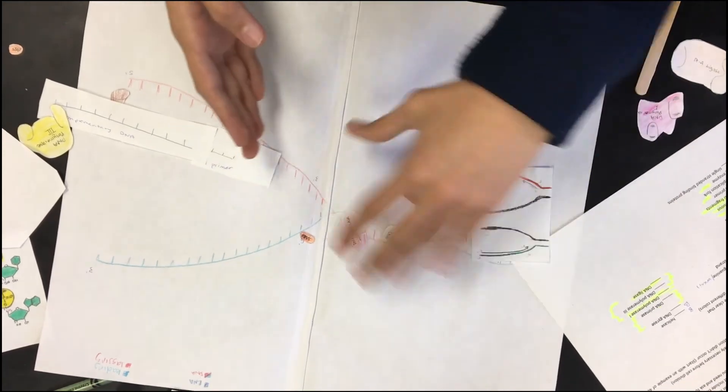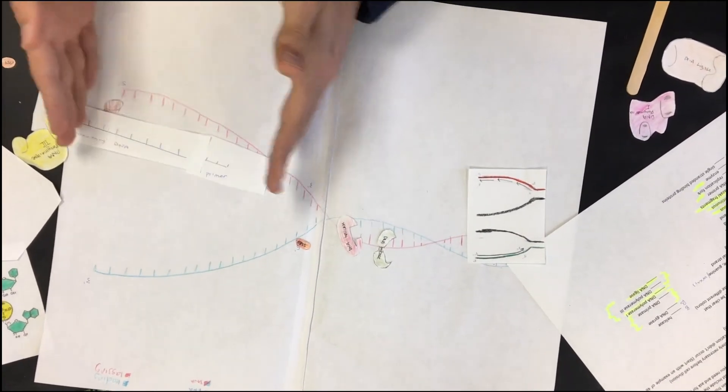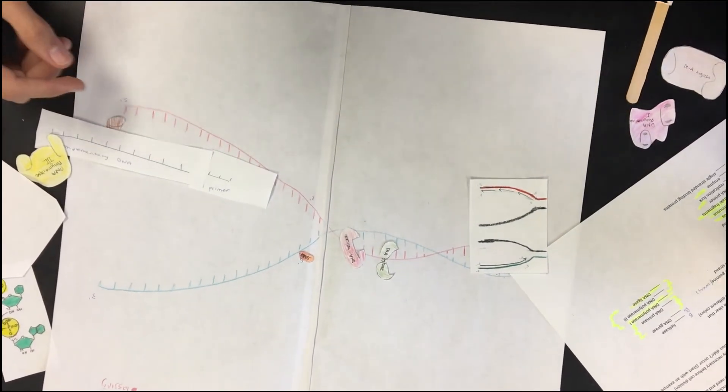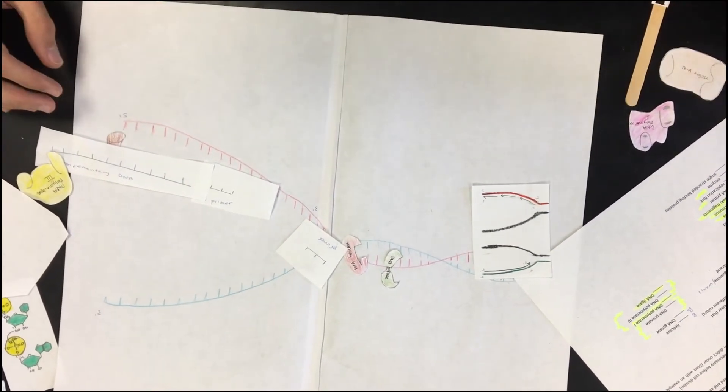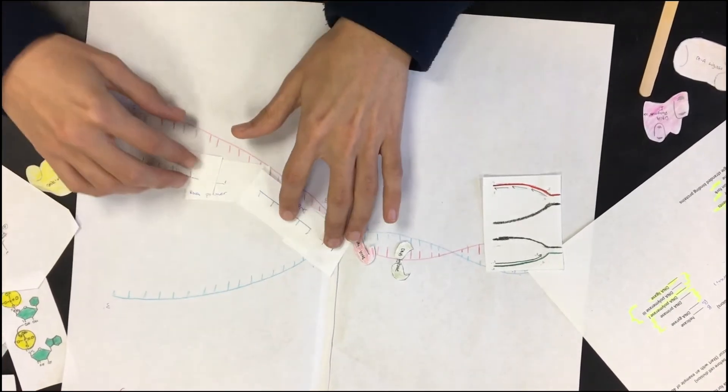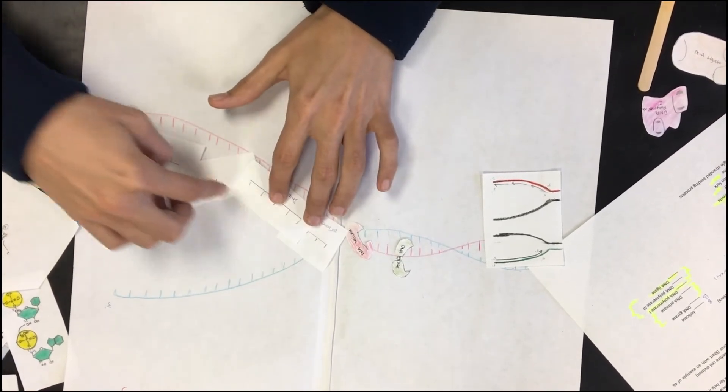But, since this is continuously opening, it has to do this in fragments. So, the same thing happens up here. Where is the other complementary DNA? Okay. So, the same thing happens up here and now you're left with RNA and DNA.